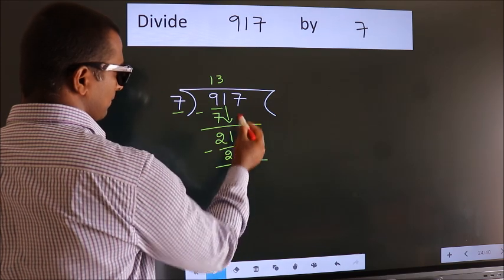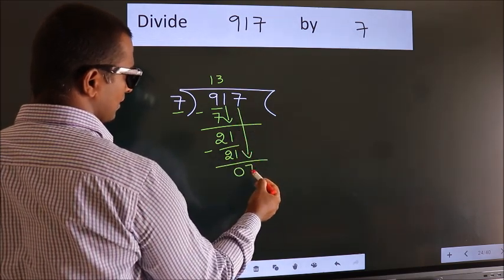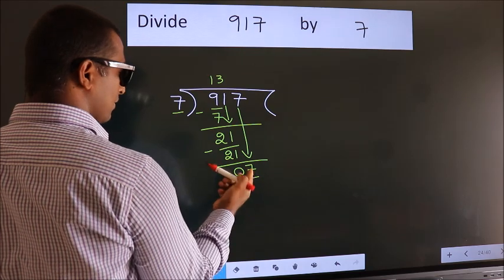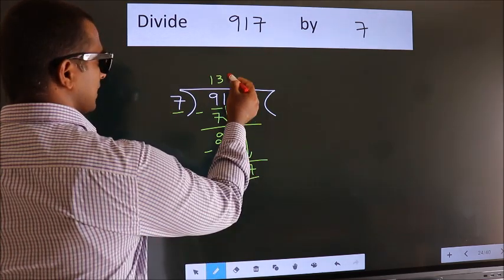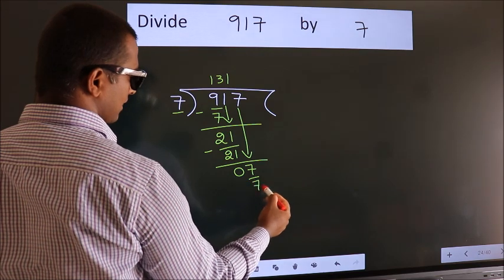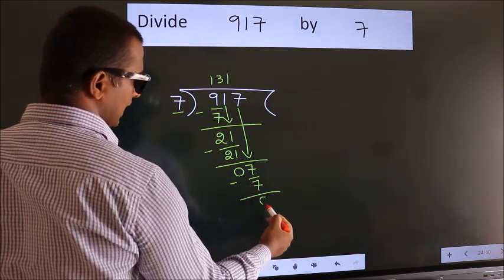After this, bring down the next number. So, 7 down. So, 7. When do we get 7? In 7 table. 7×1 = 7. Now, we subtract. We get 0.